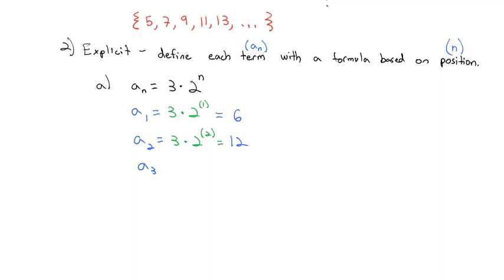And then the third term would be 3 times 2 to the third power, which is 8 times 3, which is 24. And so you can kind of see each term is ultimately being multiplied by 2. And so we could list these out as 6, 12, 24. The next one's going to be 48, and so on.